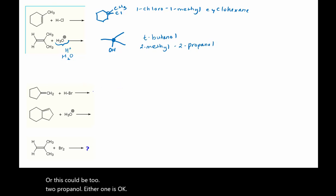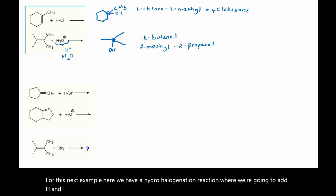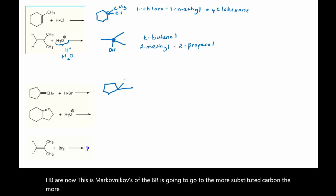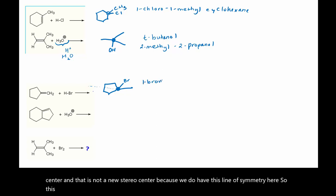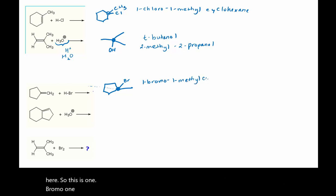For this next example, we have a hydrohalogenation reaction where we're going to add H and Br. Now this is Markovnikov, so the Br is going to go to the more substituted carbon. The more substituted carbon is on the ring, so the bromine goes here. That is not a new stereocenter because we do have this line of symmetry here. So this is 1-bromo-1-methylcyclopentane.